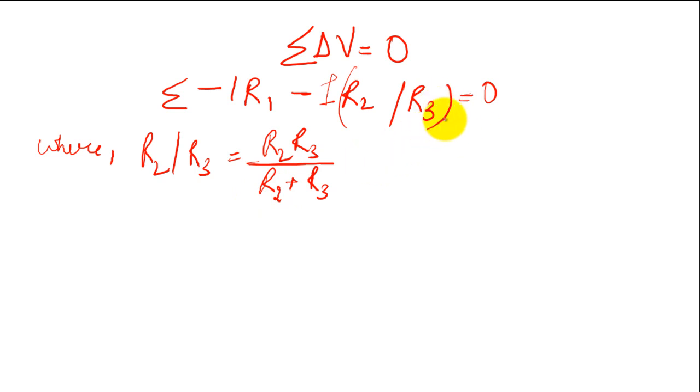The second loop equation is I2 R2 is equals to I3 R3 which is equals to minus I1 R1. This is the second loop equation.